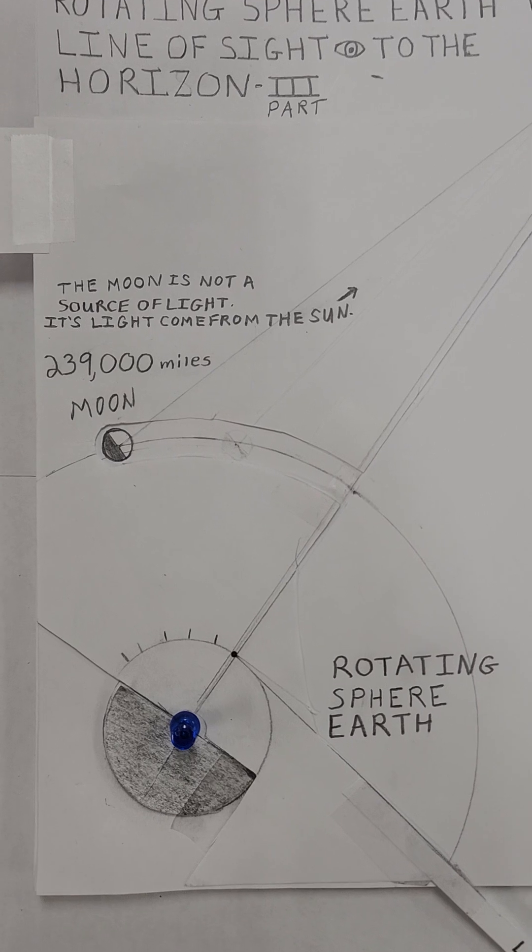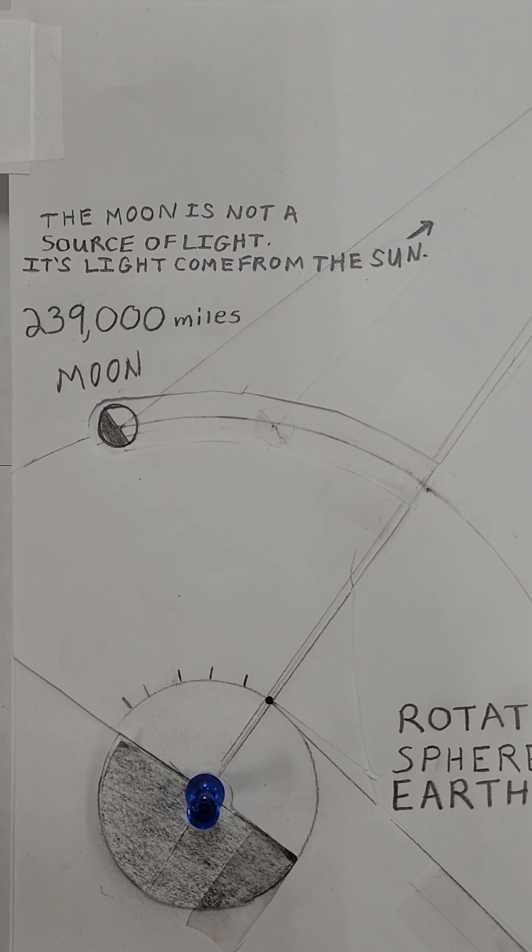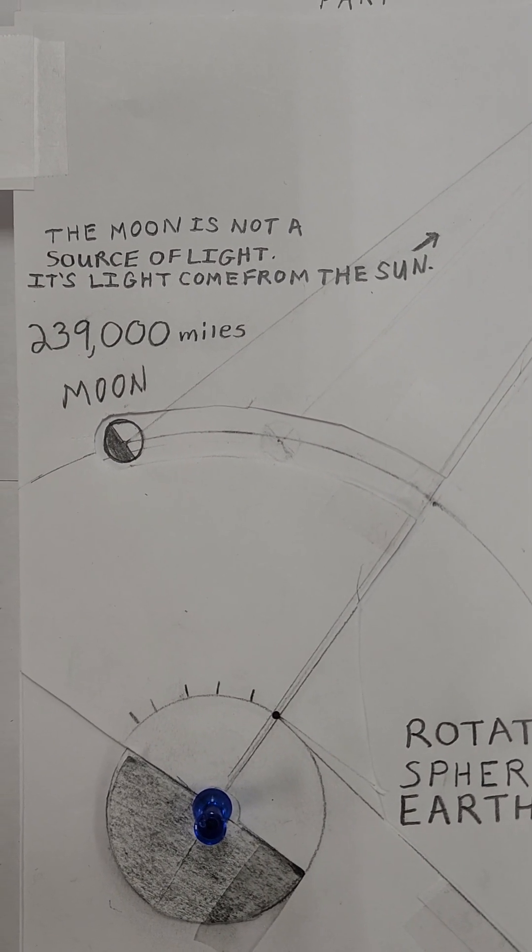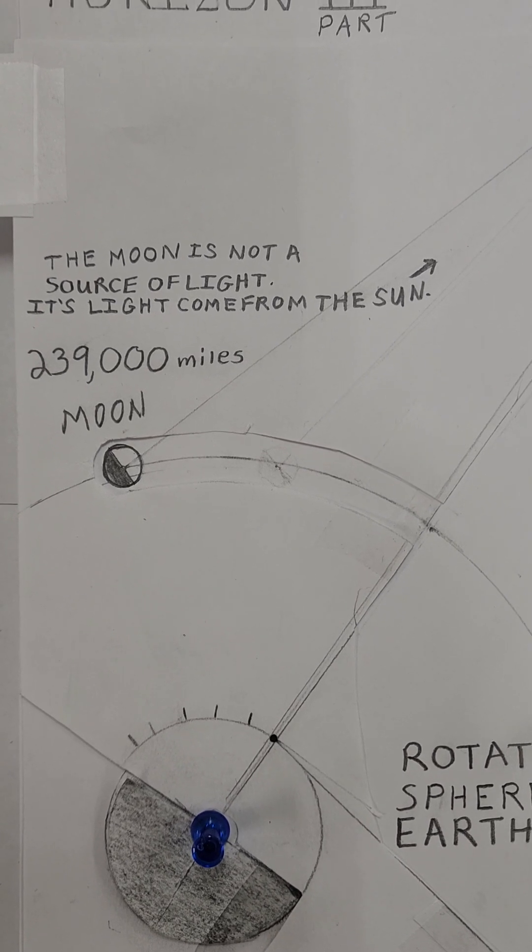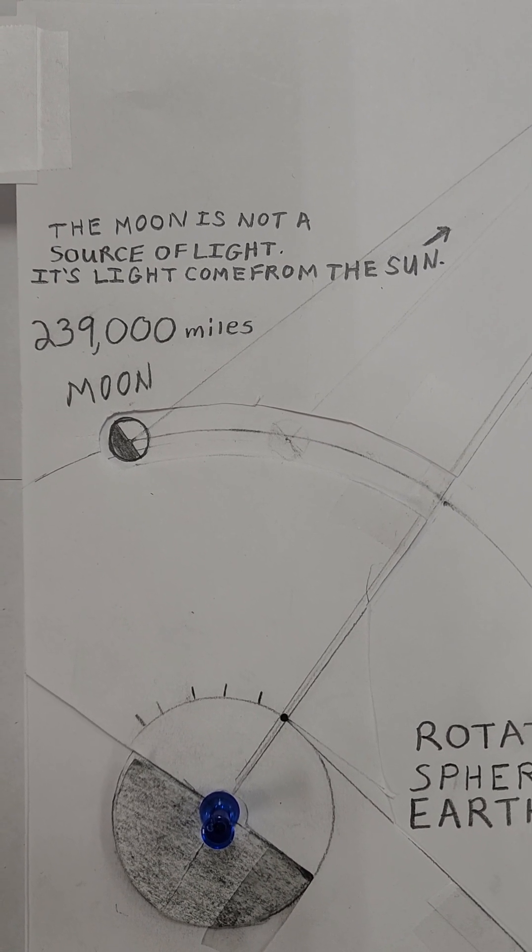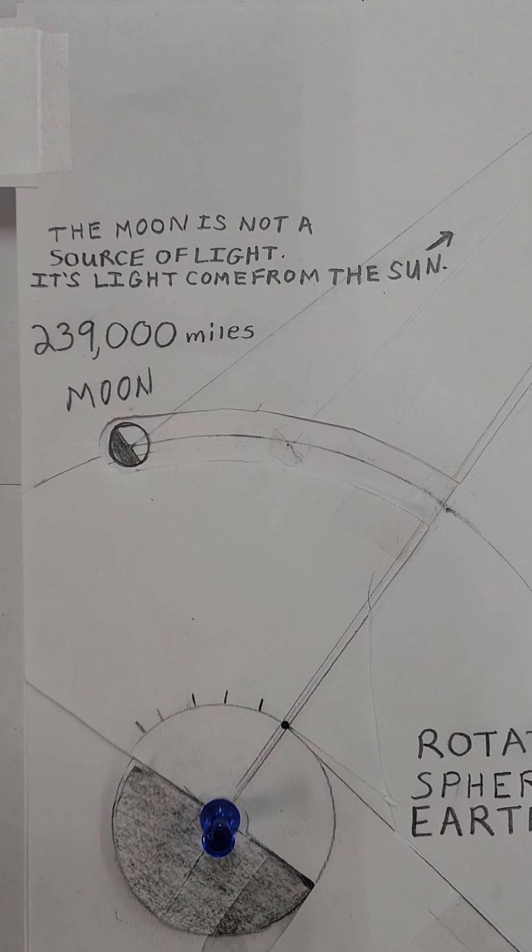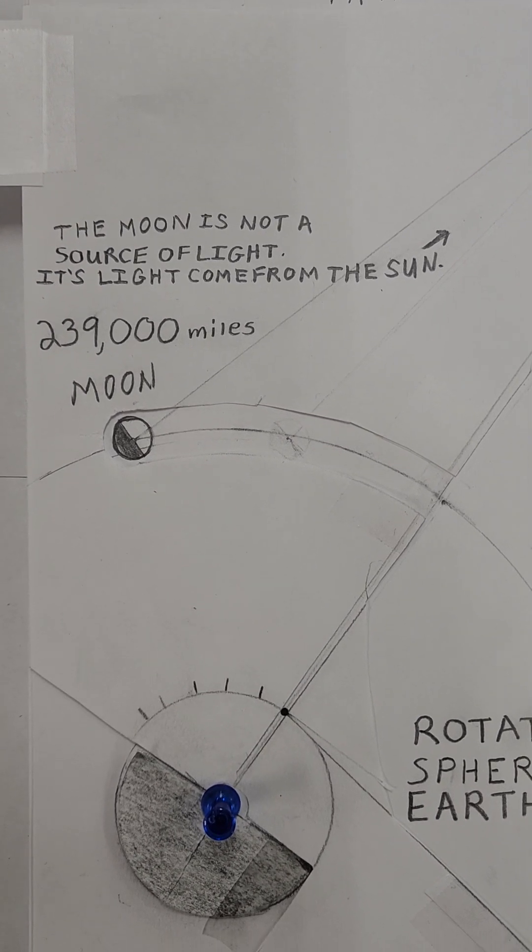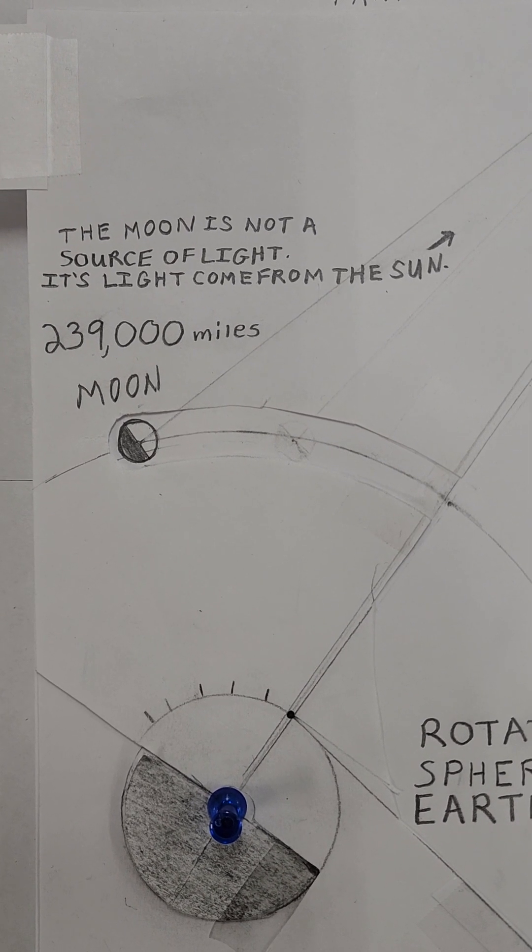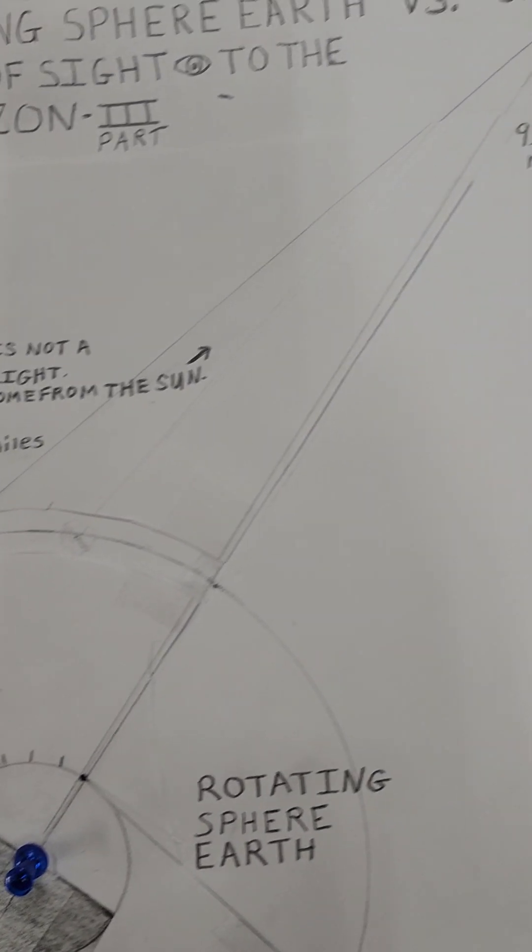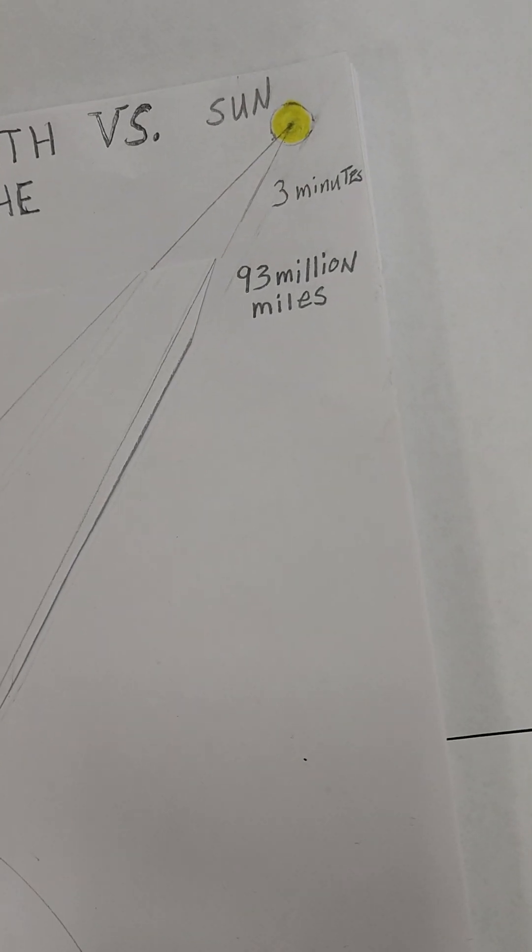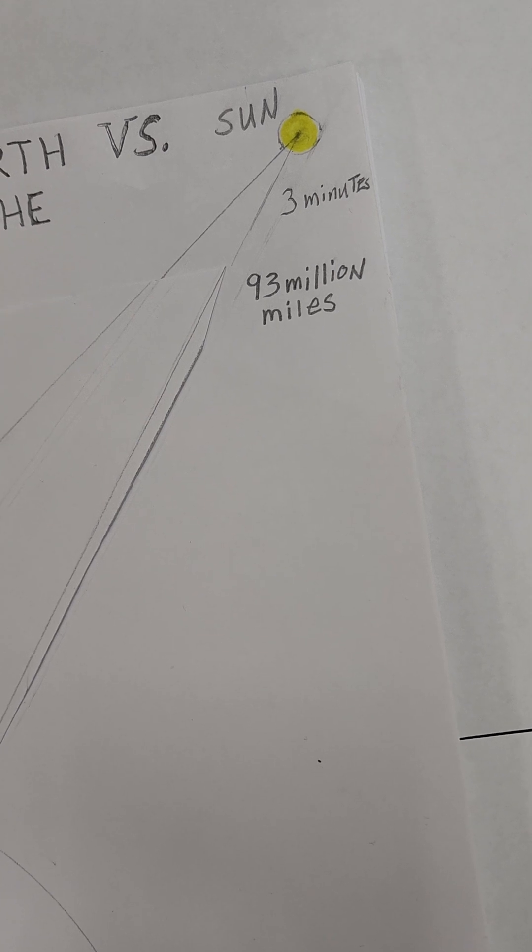In this video, as opposed to the other videos, I added where the moon is in relation to the sun. The moon is not a source of light. Its light comes from the sun. It is 239,000 miles away from the earth, approximately.